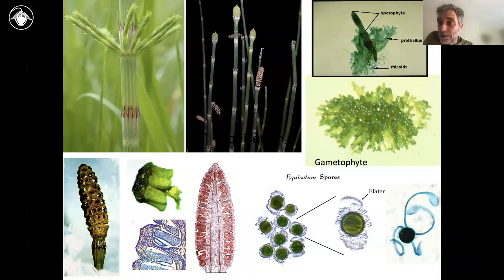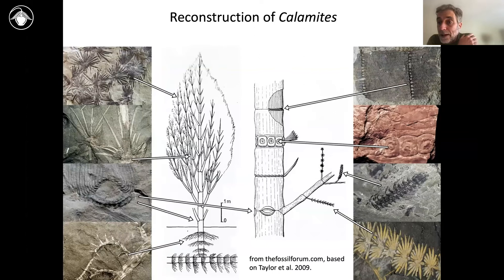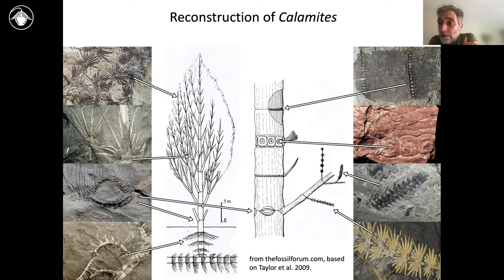Nowadays, Equisetum is only represented by approximately 15 species worldwide, but most of those species are themselves very widely distributed — not very many species, but a very wide distribution. Historically, back in the Carboniferous, around 200 to 300 million years ago, they were super dominant — one of the most ecologically important lineages, including large tree-like forms such as Calamites, an extinct relative of modern-day horsetails. The Equisetum group was enormously important in prehistory.